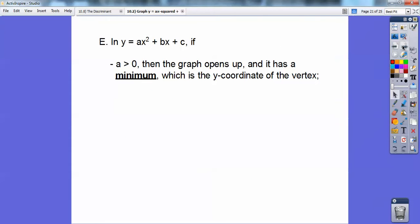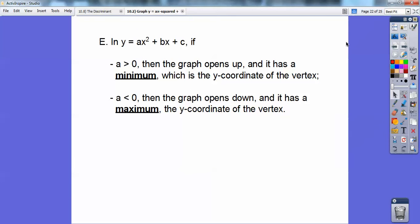All right, and then finally, when you have y equals ax squared plus bx plus c, if a is a positive number, then the graph opens up, and we had that on there, and it has a minimum value. And the minimum value is always your y-coordinate of the vertex. If a is negative, then the graph is going to open down when it's negative. And how I think of it, you guys, is when it opens down, it looks unhappy, an unsmiley face. That's why it's negative.